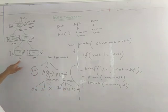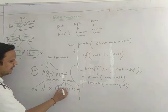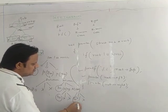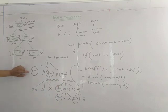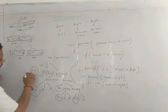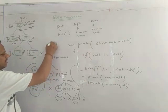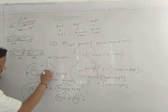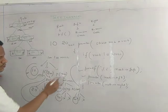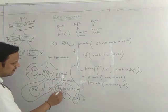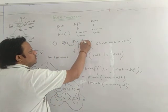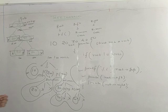So the first thing that gets printed is 10. After 10, we evaluate preorder(200), and the next value printed is 20. Since 20 has null left and right, we come to preorder(300), and 30 gets printed. After that it is 40, and then 50. So the pre-order traversal output is: 10, 20, 30, 40, 50. This is the basic code for pre-order traversal.